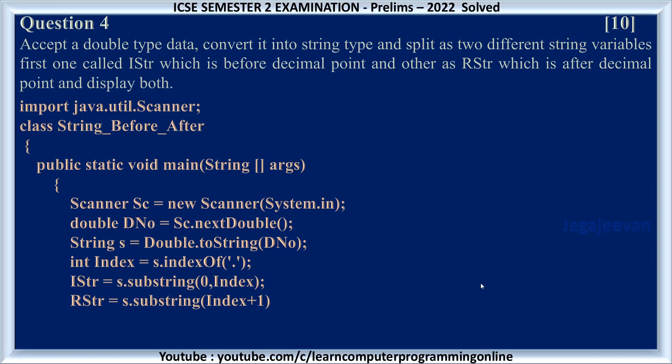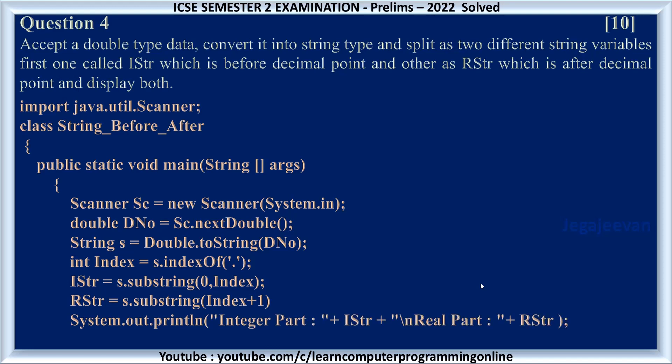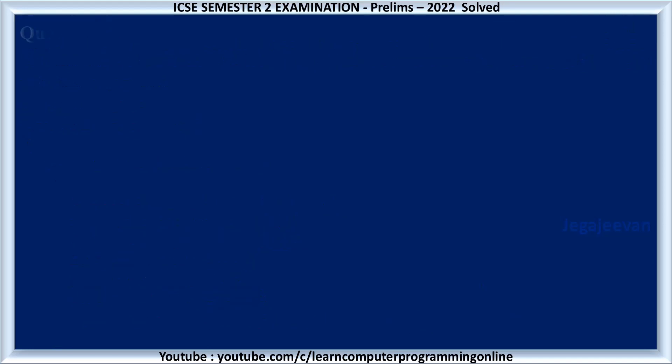Both parts are now in two different variables. We just print them: System.out.println("Integer part: " + istr + "\n" + "Real part: " + rstr). Close the method and class. Question number 5.